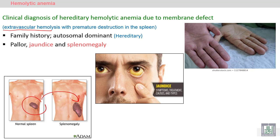It is a familial disease with a family history — the disease is present in the family. It is Autosomal Dominant, characterized by extravascular hemolysis, Anemia, Pallor, Jaundice, and Splenomegaly.